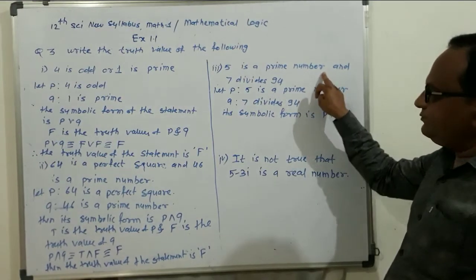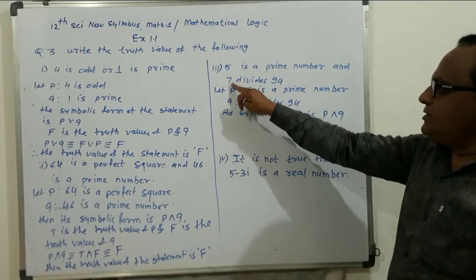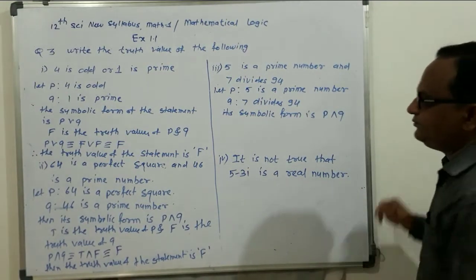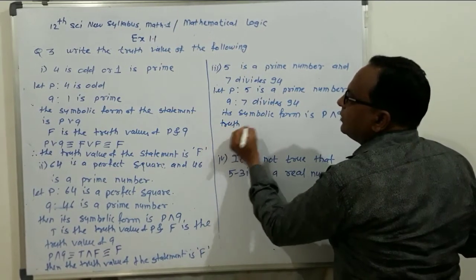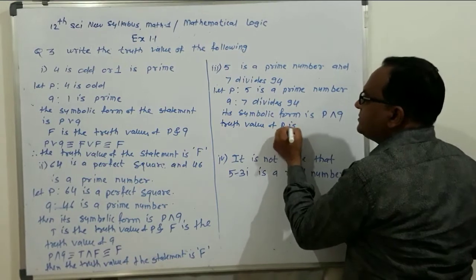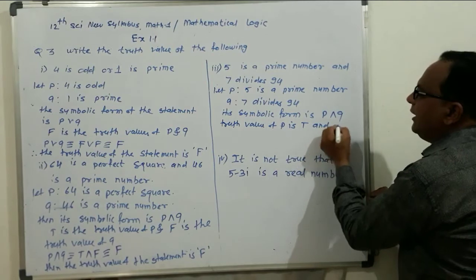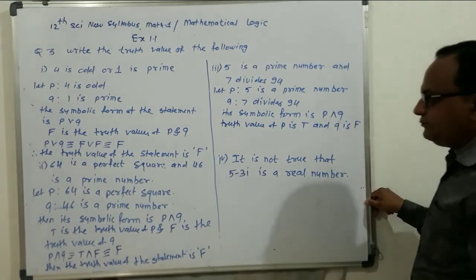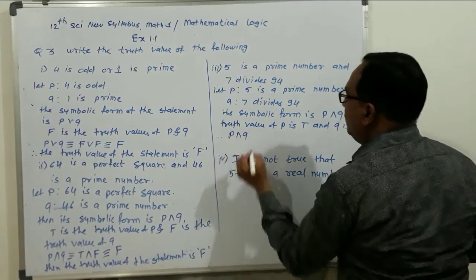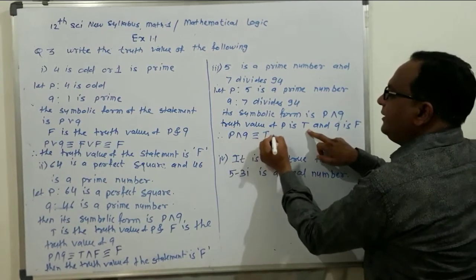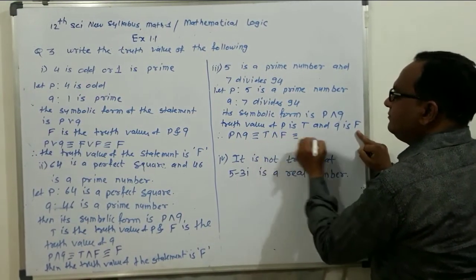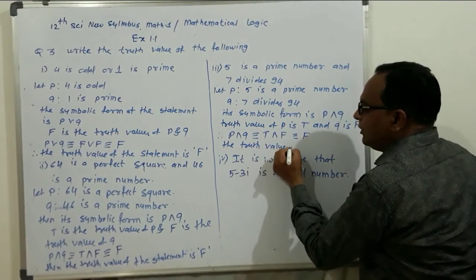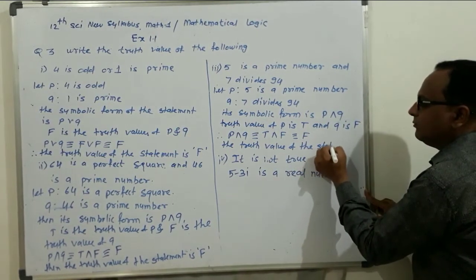Here, 5 is a prime number, which is true. And Q: 7 divides 94, which is false. So T is the truth value of P and F is the truth value of Q. P and Q is equivalent to T and F, which is equivalent to F. Therefore, the truth value of the statement is F.